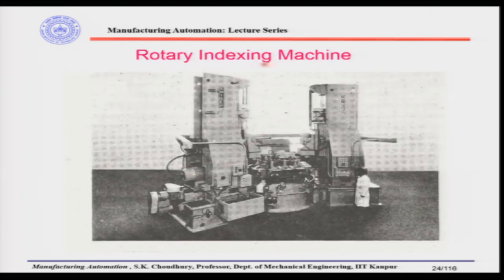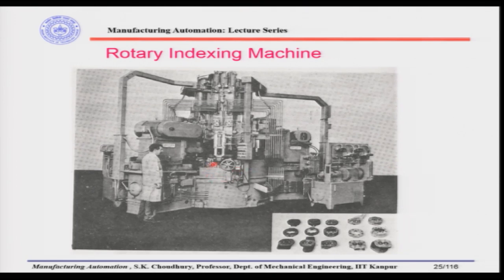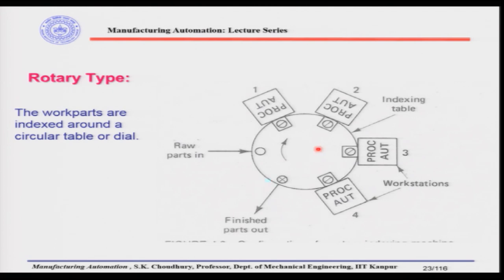Here are some examples. This is a rotary indexing machine — you can see the rotary indexing table in the center with machines arranged around it. The part is indexed and stops for processing or assembly, then transferred to the next workstation for subsequent operations. The rotary indexing table rotates and stops — indexing and dwelling — continuously through the process.